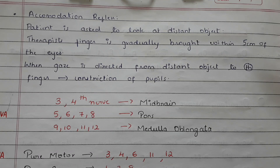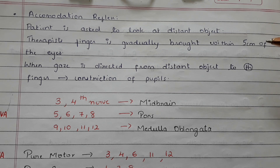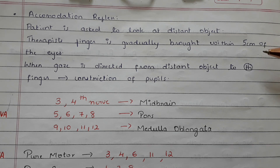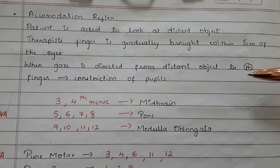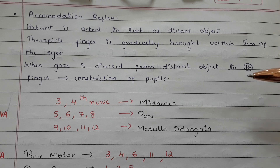The third reflex is the accommodation reflex. The patient is asked to look at a distant object. The therapist's finger is gradually brought within 5 cm of the patient's eyes. When the patient's gaze is directed from the distant object to the therapist's finger, this results in constriction of pupils.